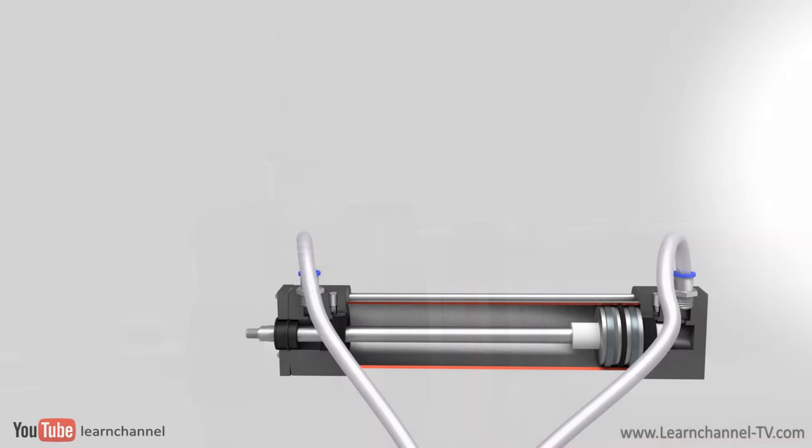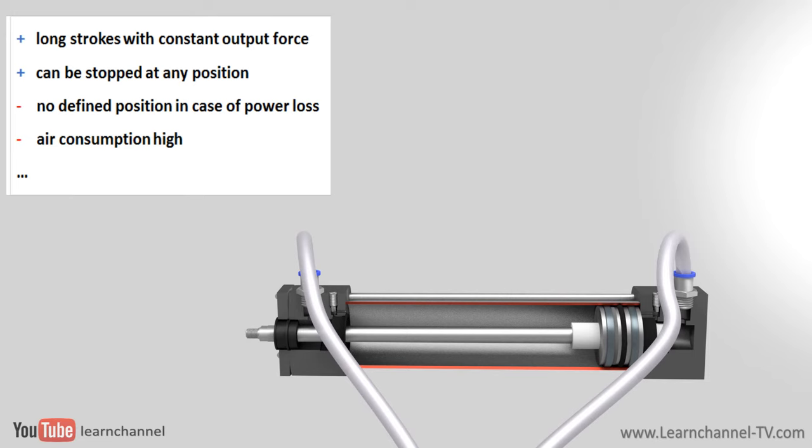In summary, double-acting cylinders can have long strokes, up to several meters, with a constant output force through a full stroke. They give the user full control, as they can be stopped in any position.